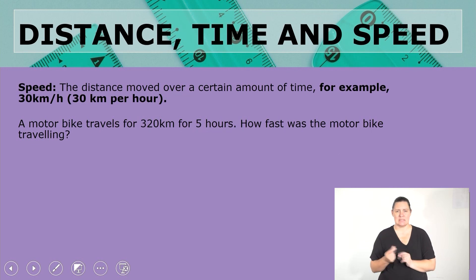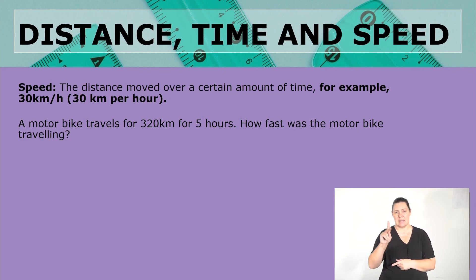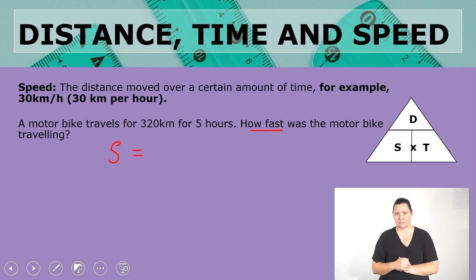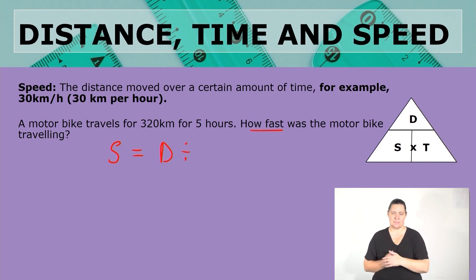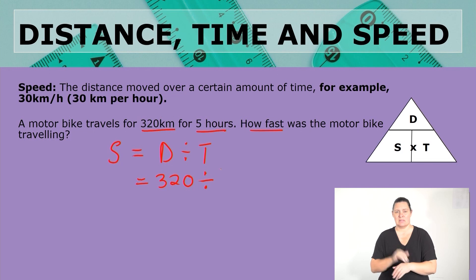Let's look at speed. What is speed? The distance moved over a certain amount of time — for example, 30 kilometers per hour. An example: a motorbike travels for 320 kilometers for five hours. How fast was the motorbike traveling? 'How fast' is asking us for the speed. Do you remember what the formula for speed is? Let's get our triangle to help us. Speed is distance divided by time. What is our distance? 320 kilometers, divided by our time of five hours.